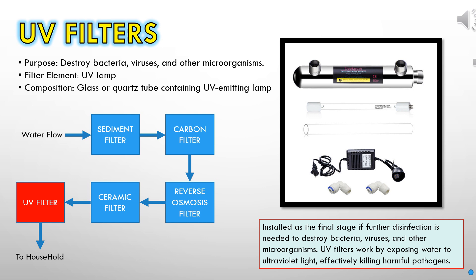This renders microorganisms incapable of reproduction and ultimately leads to their destruction. Unlike traditional filtration methods, the operation of a UV lamp does not impact the system's operating pressure, allowing for consistent and efficient water treatment without affecting flow rates.